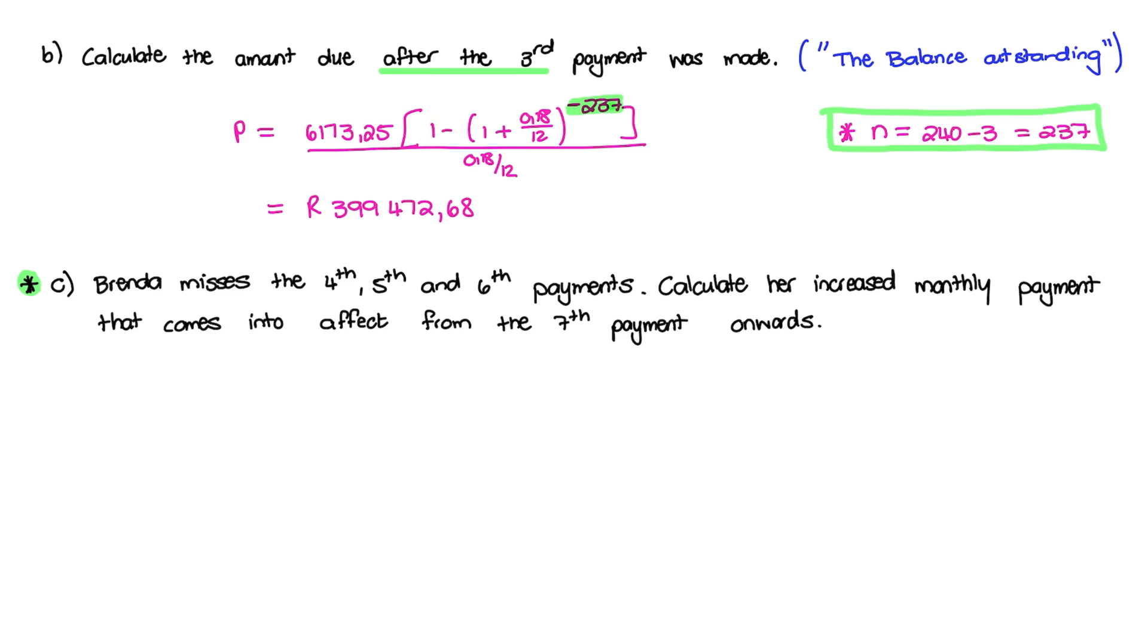And this answer leads into the next question. And this is the focus of this video. It says, Brenda misses the fourth, the fifth and the sixth payments. Calculate her increased monthly payment that comes into effect from the seventh payment onwards.